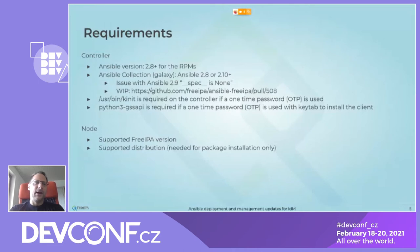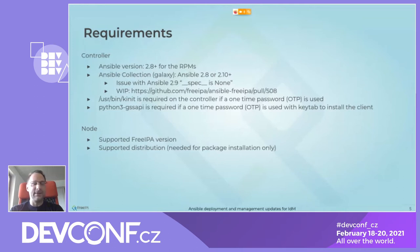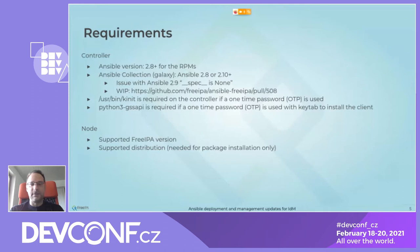On the controller, Ansible 2.8+ is supported for all RPMs we provide for ansible-freeipa and also upstream. We also have an Ansible Collection on Galaxy, which is fully supported in Ansible 2.8 and 2.10+. There is currently an issue with 2.9 in the deployment roles — you will run into a 'spec is None' error because Ansible imports module utils incorrectly on the controller. A workaround is in progress and will be added in the coming weeks.